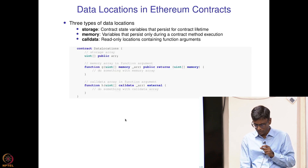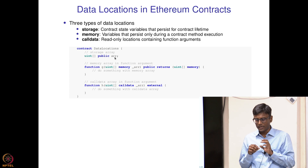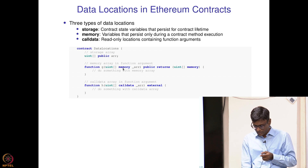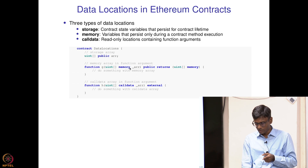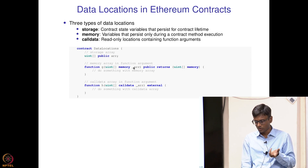The third type is call data, which are read-only locations in function arguments. For example, a storage array persists as long as the contract exists and can be accessed in all method calls. A memory array — like an argument annotated as memory — is only accessible during the current function call and disappears after it completes. Call data, annotated as 'calldata' on a function argument, is also accessible only in the current method call and cannot be accessed in later calls.